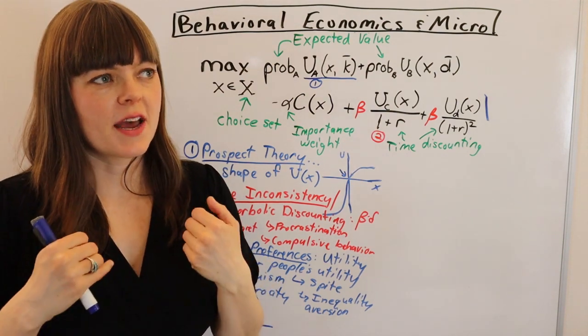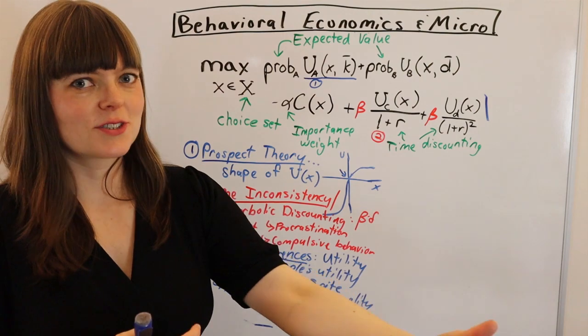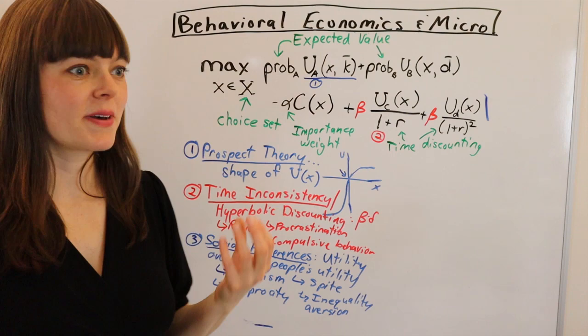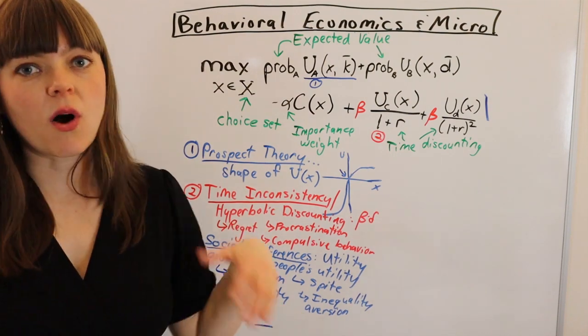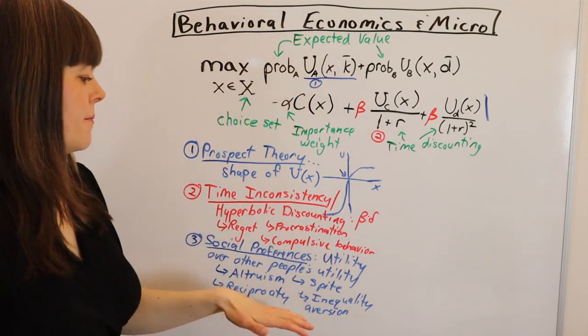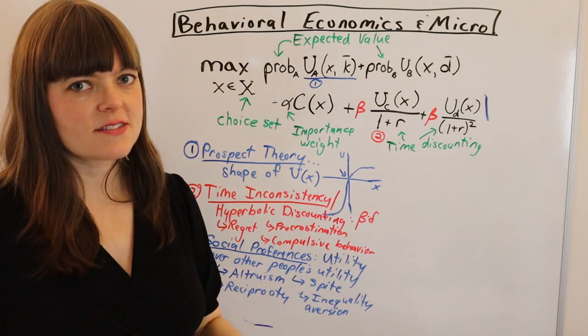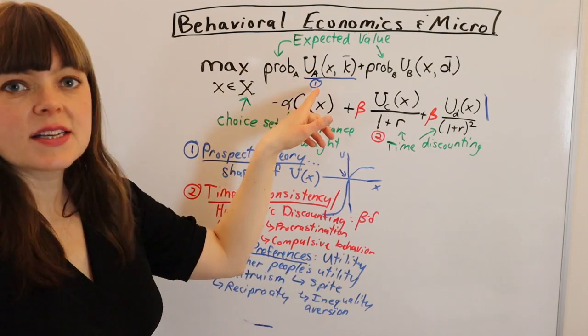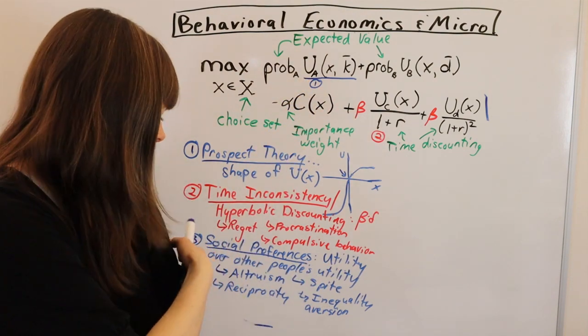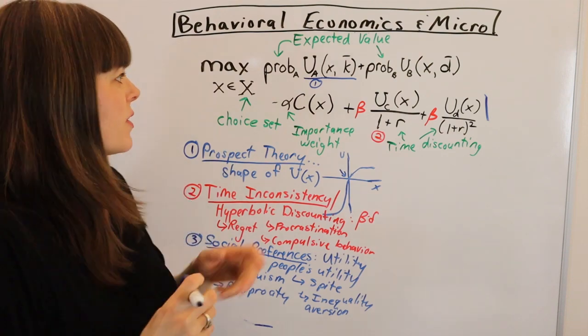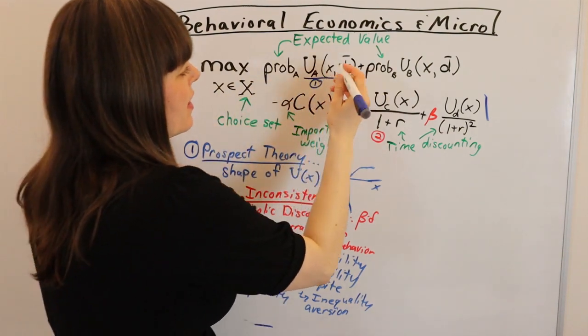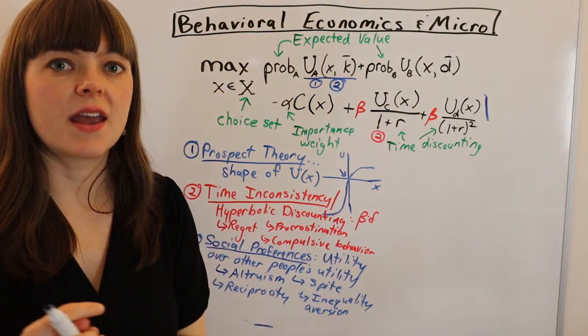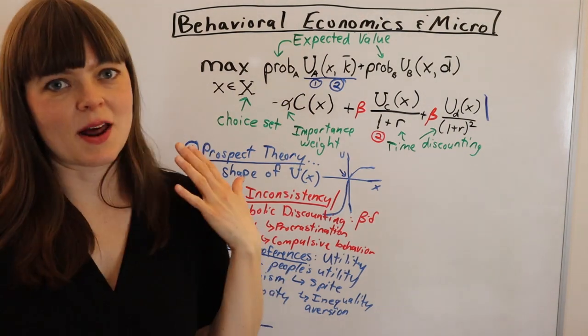And you can build that into a model, which is really fun. Inequality aversion is another thing under the subcategory of social preferences. And of course, social preferences are anytime we have other people's utility built into our utility functions. So number three, social preferences also is going to modify how we construct our utility functions in our classic microeconomic model.